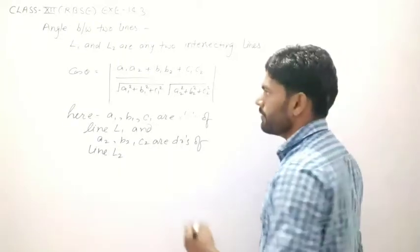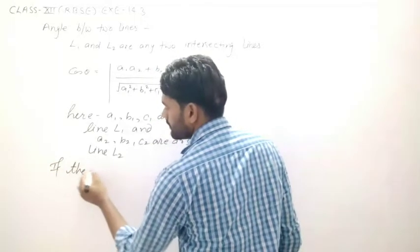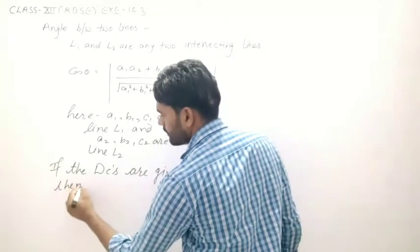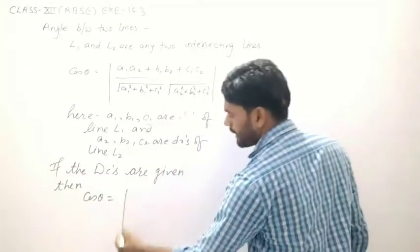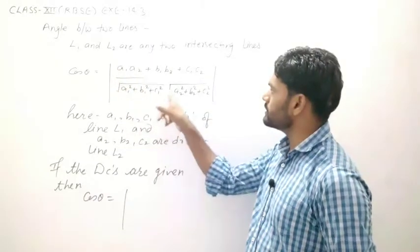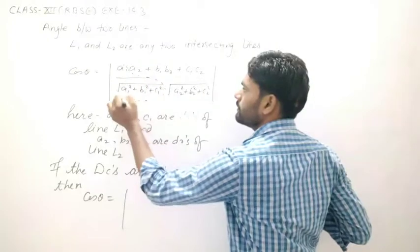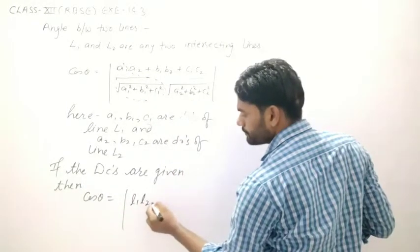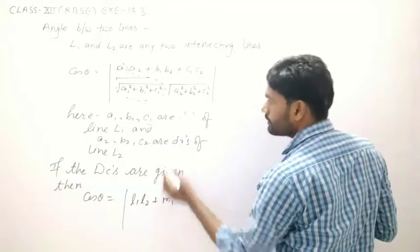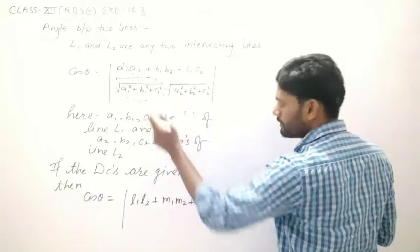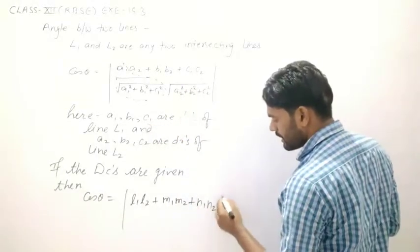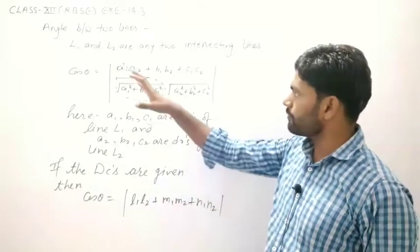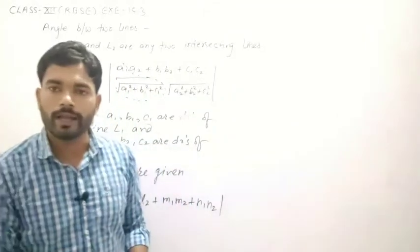When direction cosines are given, the angle formula becomes: cos θ = |l₁l₂ + m₁m₂ + n₁n₂|. Here l₁, m₁, n₁ are direction cosines of line L1, and l₂, m₂, n₂ are direction cosines of line L2.